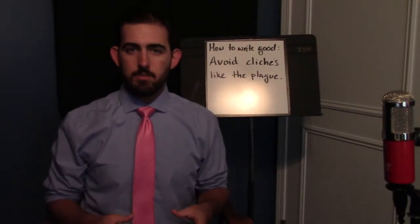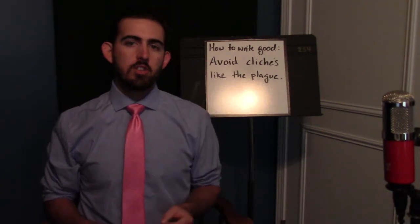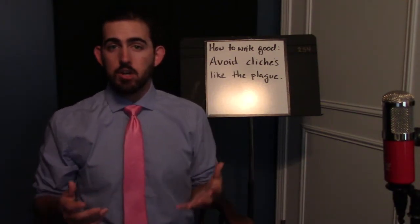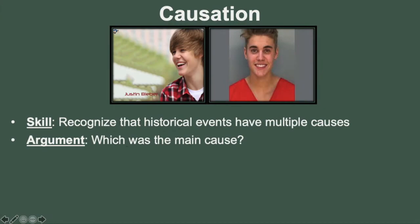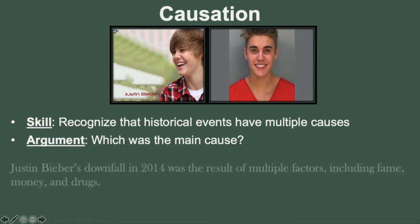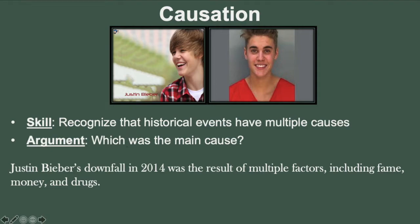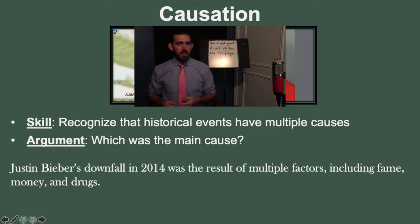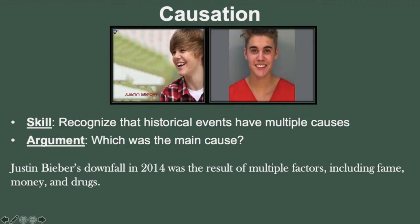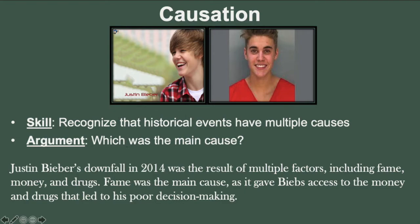Finally, let's talk about causation. In a causation essay, you'll most likely be writing about the causes of a major event. College Board wants you to recognize that historical events have multiple causes. Let's consider Justin Bieber's 2014 arrest as our major event. I should be able to recognize that the Biebs' downfall was caused by multiple factors, which probably include money, fame, and drugs. In order to make this argumentative, I need to decide which factor was the main cause and which were the secondary causes. In this instance, I'll say that fame was the main cause, as it gave Biebs access to the money and drugs that led to his poor decision making.